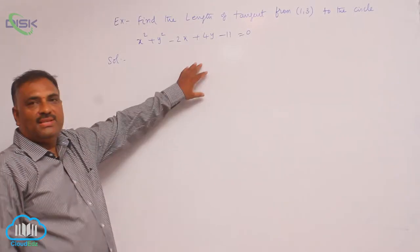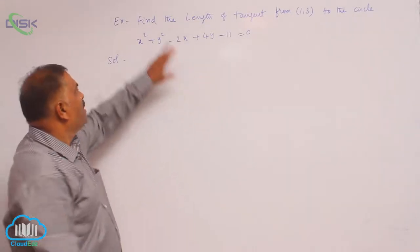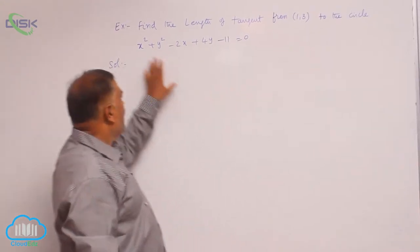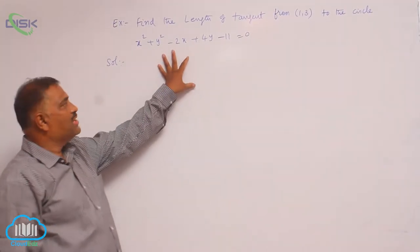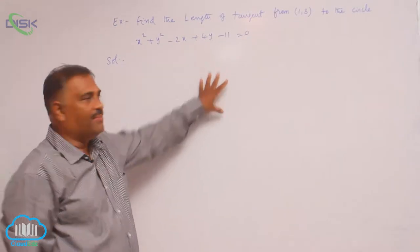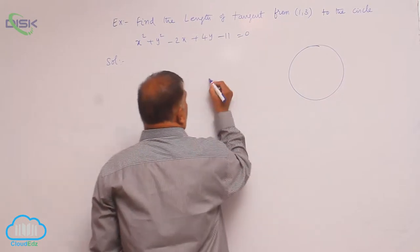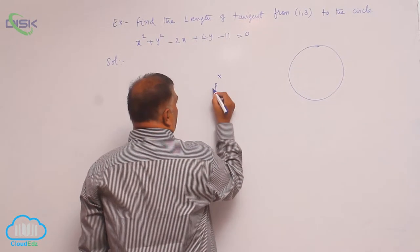We discuss a problem based on length of tangent. Find the length of the tangent from (1, 3) to the circle x² + y² - 2x + 4y - 11 = 0. Now this is the tangent circle equation and the point is here (1, 3).